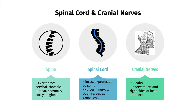The spine consists of 33 individual bones, which make up the vertebral column, divided into the cervical, thoracic, lumbar, sacrum, and coccyx regions. The spinal cord, contained by the spine, consists of nerves that innervate, or connect to and control, the parts of the body at the same level. The cranial nerves are 12 pairs of nerves that innervate, respectively, the left and right sides of the head and neck.